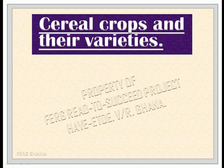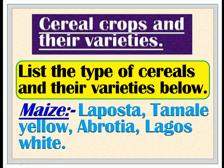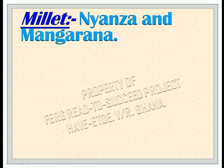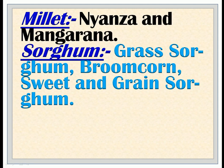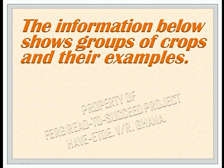Cereal crops and their varieties: List the types of cereals and their varieties. Maize varieties include Laposta, Tamalea, Yellow, Abrotea, Lagos White. Millet varieties include Yanza and Mangana. Sorghum varieties include Grass Sorghum, Broom, Sweet, and Grain Sorghum. Rice varieties include Swamp Rice, e.g. China, Farden, Nichan. The information below shows groups of crops and their examples.